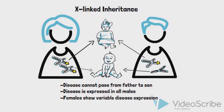X-linked conditions can show dominant or recessive patterns of inheritance. Since males have only one X chromosome inherited from the mother, X-linked recessive pathogenic variants will be expressed in all males with the variant, and carrier females may be mildly or unaffected. By contrast, X-linked dominant conditions typically present only in affected females, with male lethality. Other conditions may present similarly in both females and males, and some experts suggest these be termed X-linked, rather than X-linked dominant or recessive.